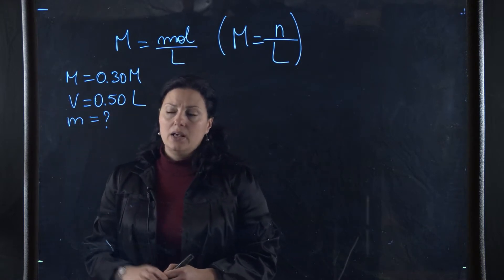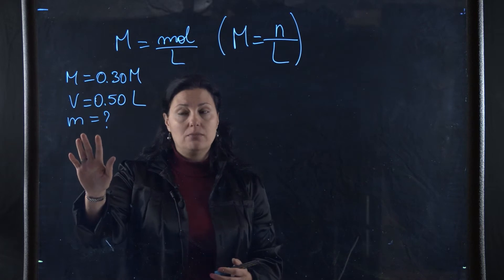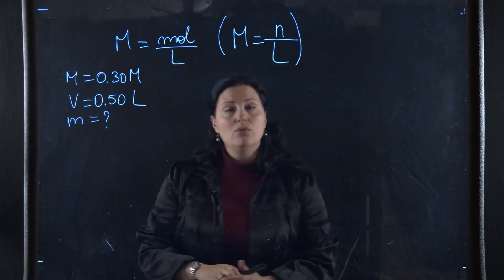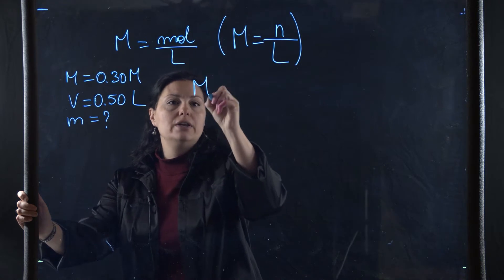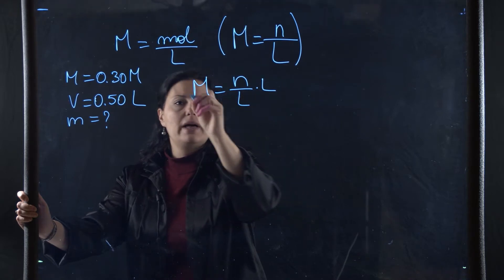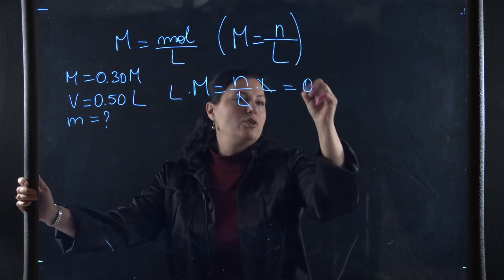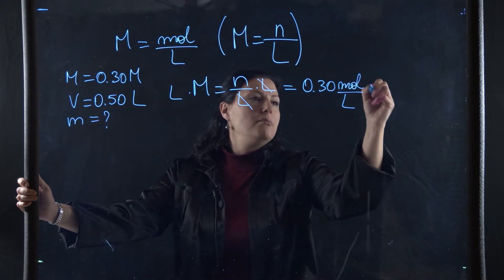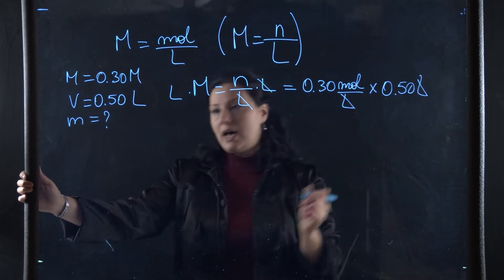Before we figure out the mass, what we can figure out from these two pieces of information is the number of moles. We know that molarity is the number of moles over liters. To isolate the number of moles, I multiply by liters on both sides. If I multiply 0.3 moles per liter by 0.5 liters, I get 0.15 moles.